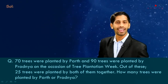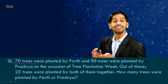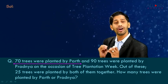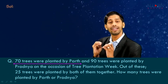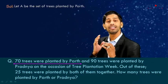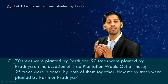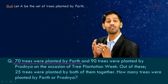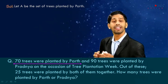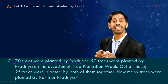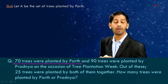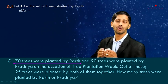Let's see one statement at a time. So what is given to us: 70 trees were planted by Parth. For Parth we are going to assign a capital letter — we can use any letter. So let A be the set of trees, or we can write let A be the number of trees planted by Parth. Since the number of trees planted by Parth is 70, we can write in mathematical form as n(A) = 70.